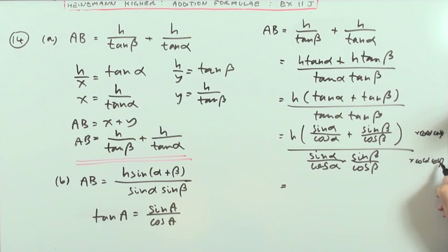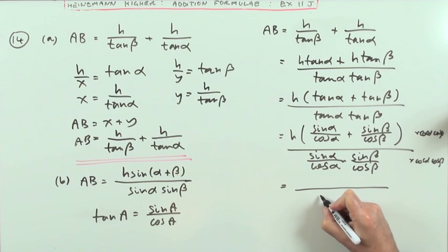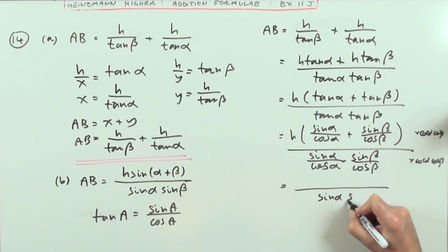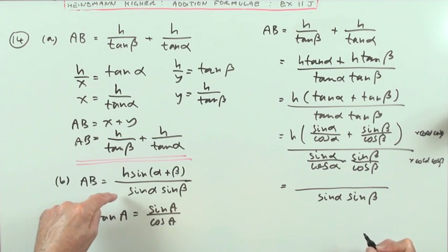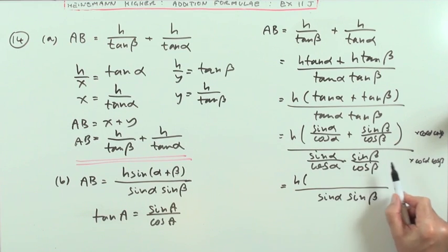Multiplying the bottom by cos alpha cos beta simply turns the bottom into sin alpha sin beta. There we go. So far, look at that h there. Multiplying the top by cos alpha - now there's two parts they both need to get multiplied - so cos alpha times cos alpha beta leaves cos beta, so I've got sin alpha cos beta.